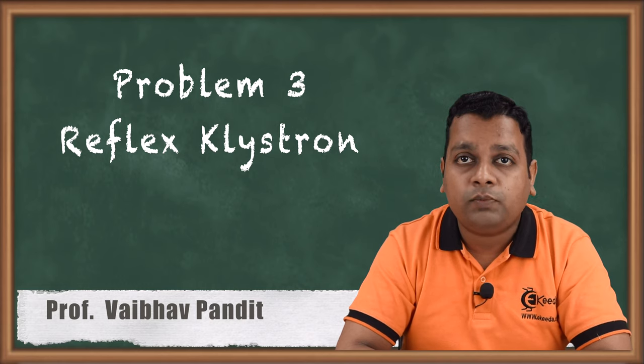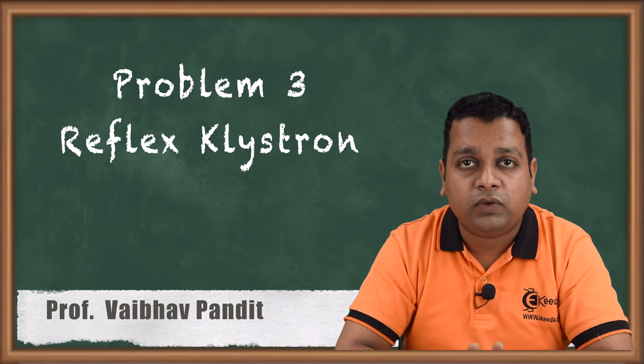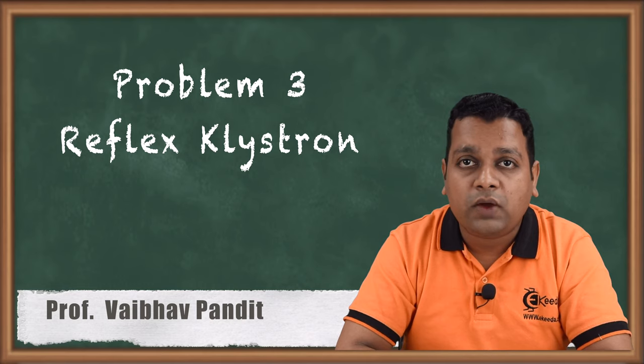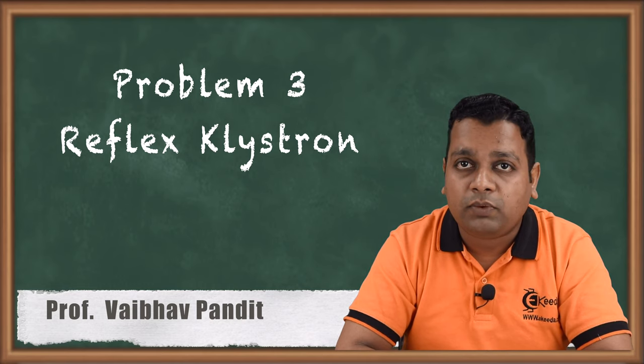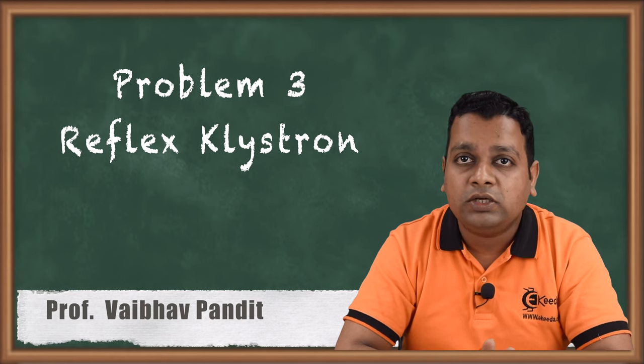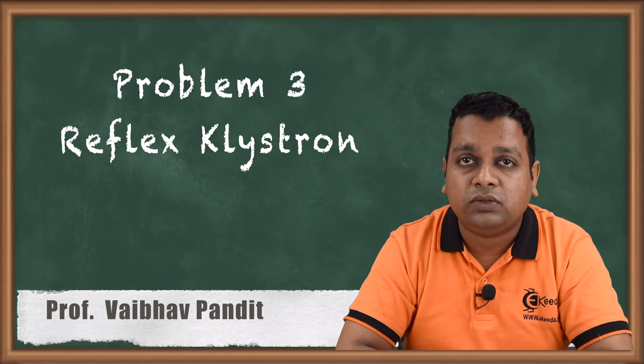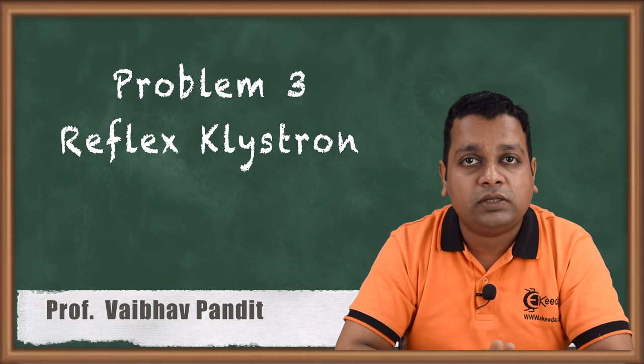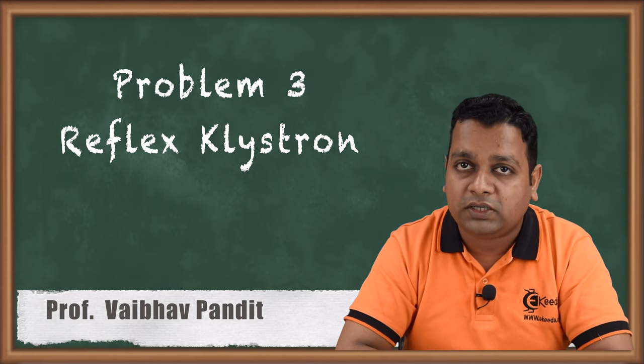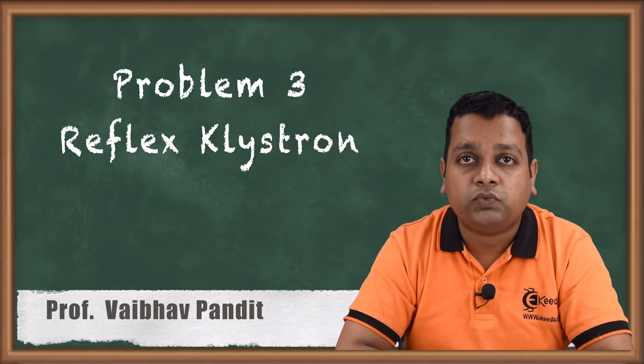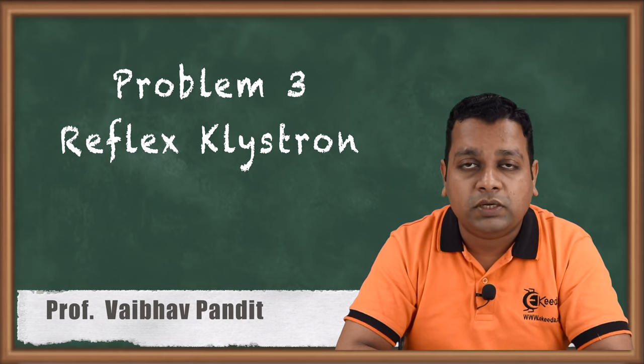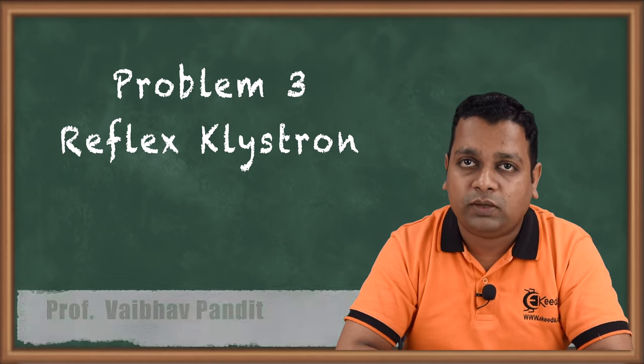For the purpose of generation of microwave we require an oscillator. The 2-cavity klystron as amplifier if modified to get oscillator has certain limitations. So avoiding the limitations of that device we have switched to the reflex klystron. That reflex klystron overcomes all those limitations. In the previous 2 videos we have covered 2 problems based on it. Let us have the next problem.